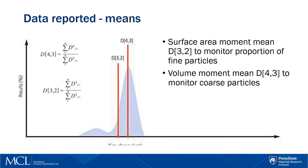D32 is most relevant when surface area is important — for example, when you study reactivity, dissolution, or bioavailability. It is most sensitive to the fine particles in the size distribution. The volume moment mean D43 reflects the size of those particles which consist of the bulk of the sample volume, and it is most sensitive to the presence of larger particles in the size distribution.